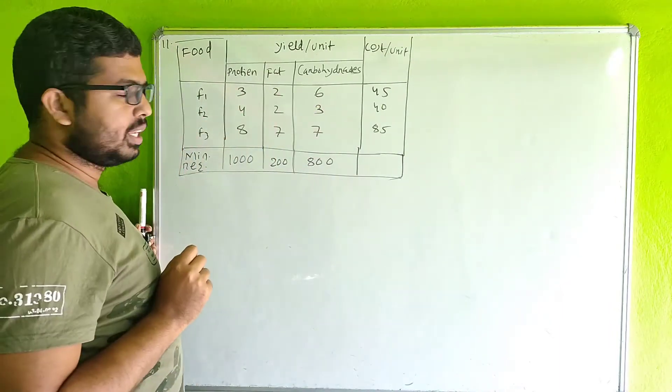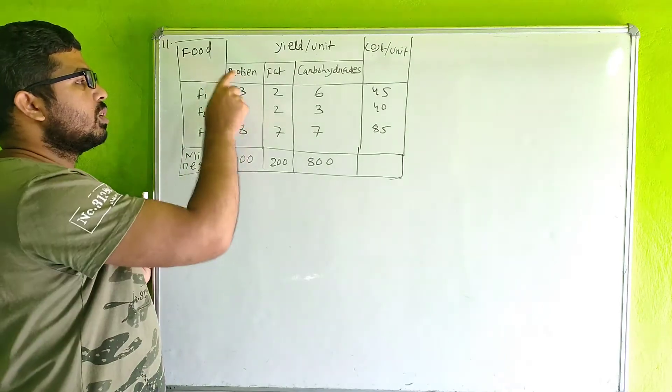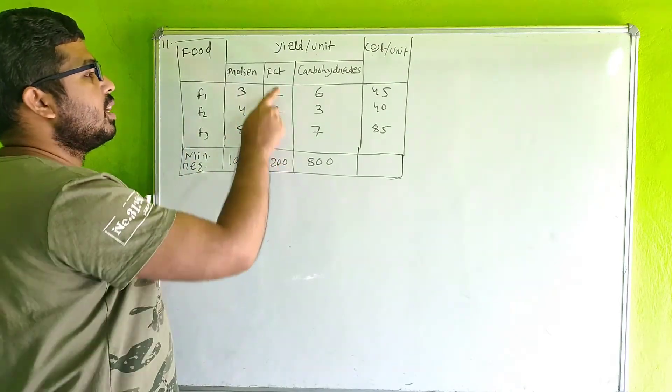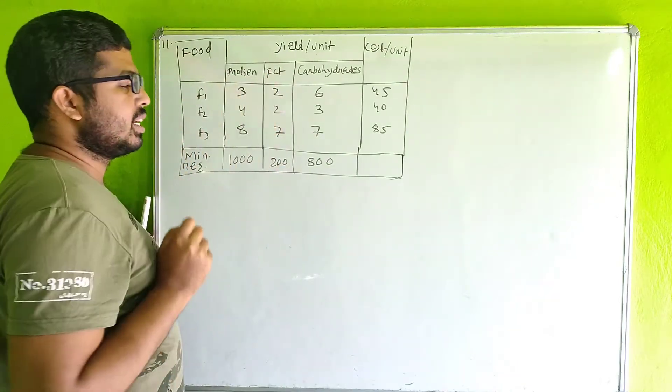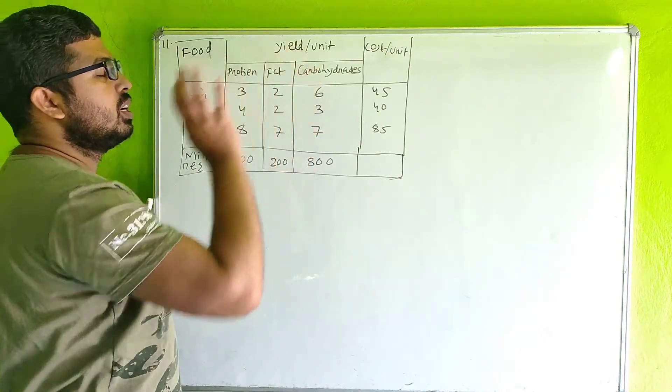F3 food is mixed with 8 units of protein, 7 units of fat, and carbohydrates.